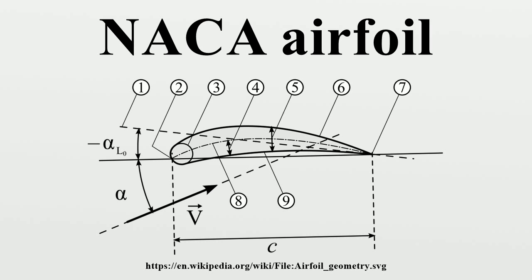Eight series: Supercritical airfoils designed to independently maximize airflow above and below the wing. The numbering is identical to the 7 series airfoils except that the sequence begins with 8 to identify the series.